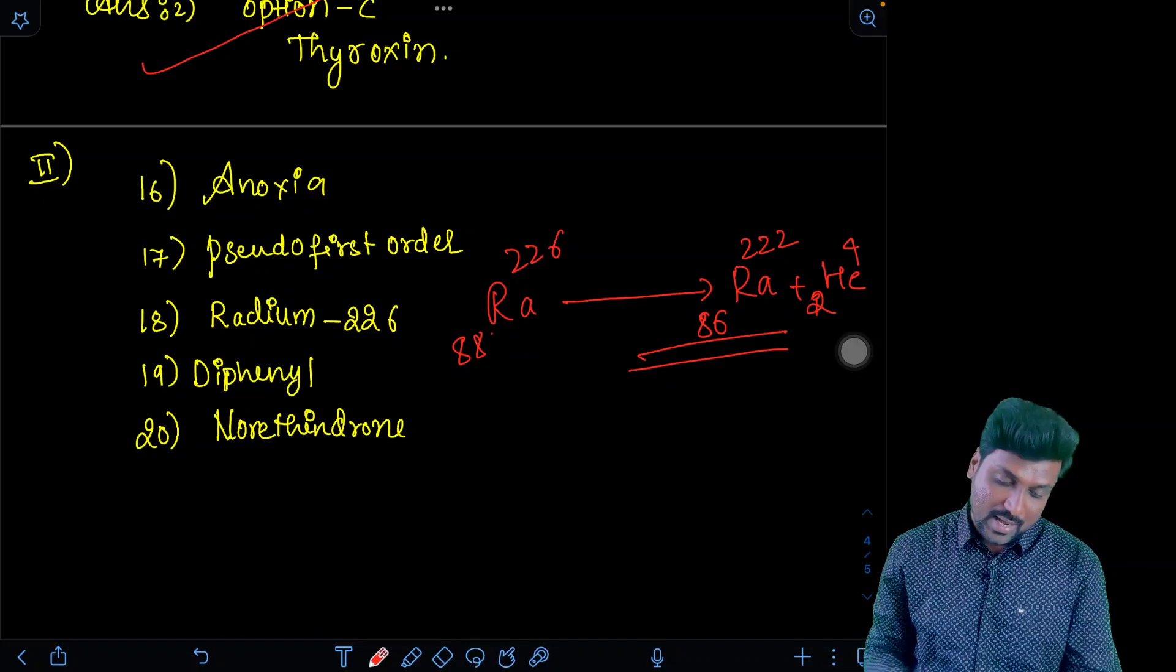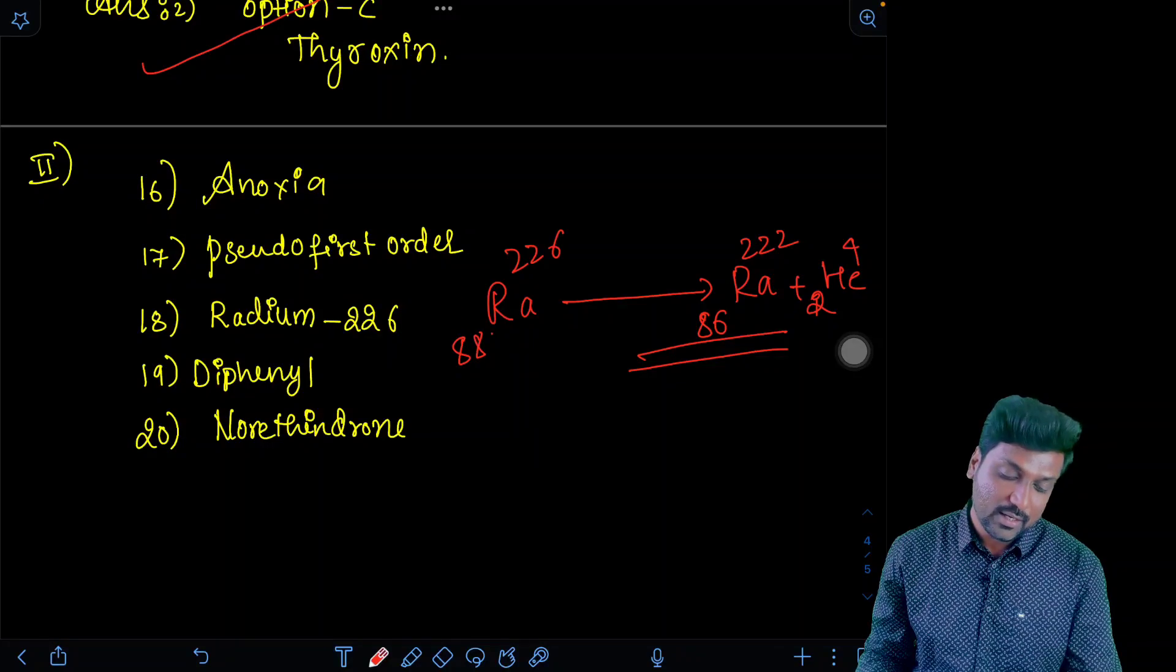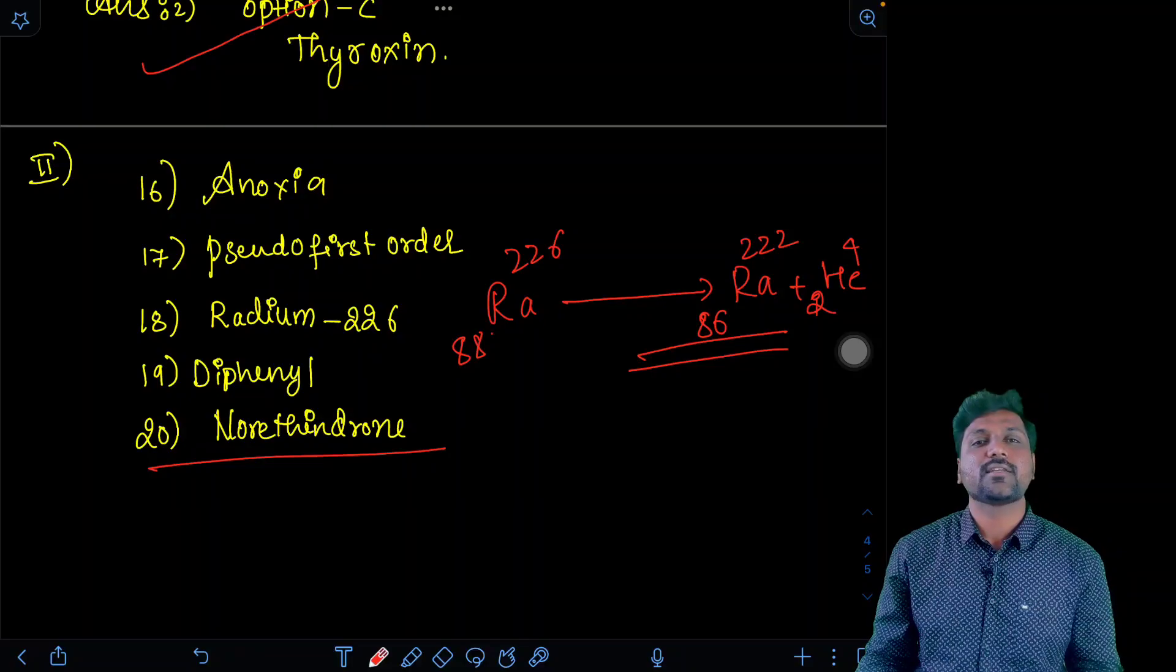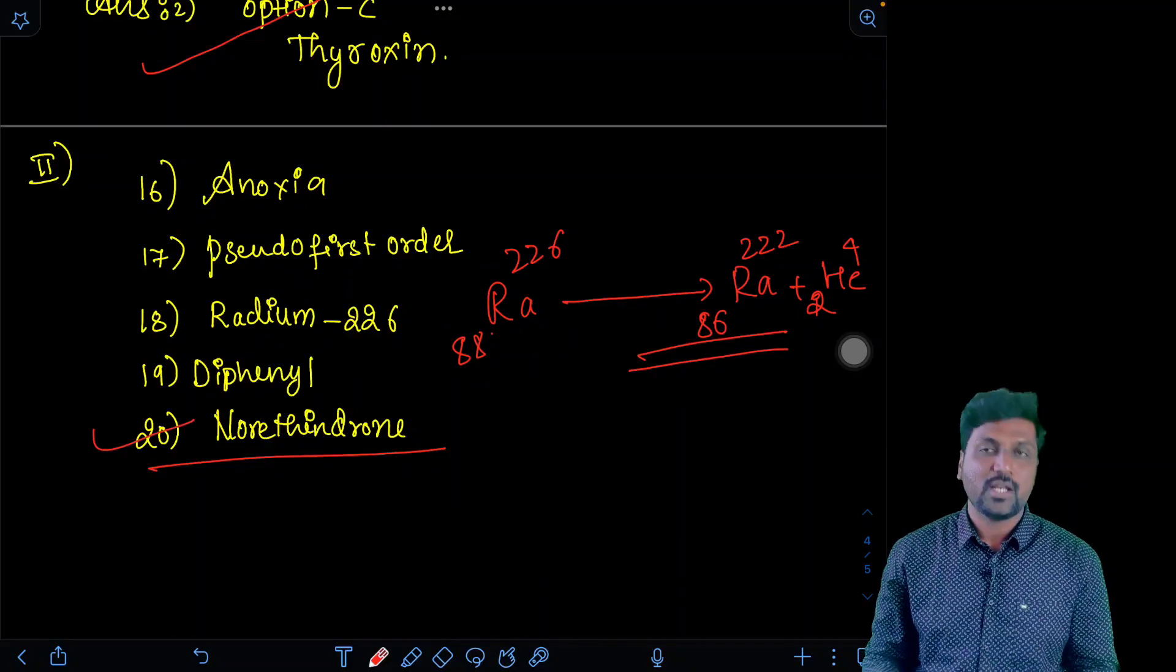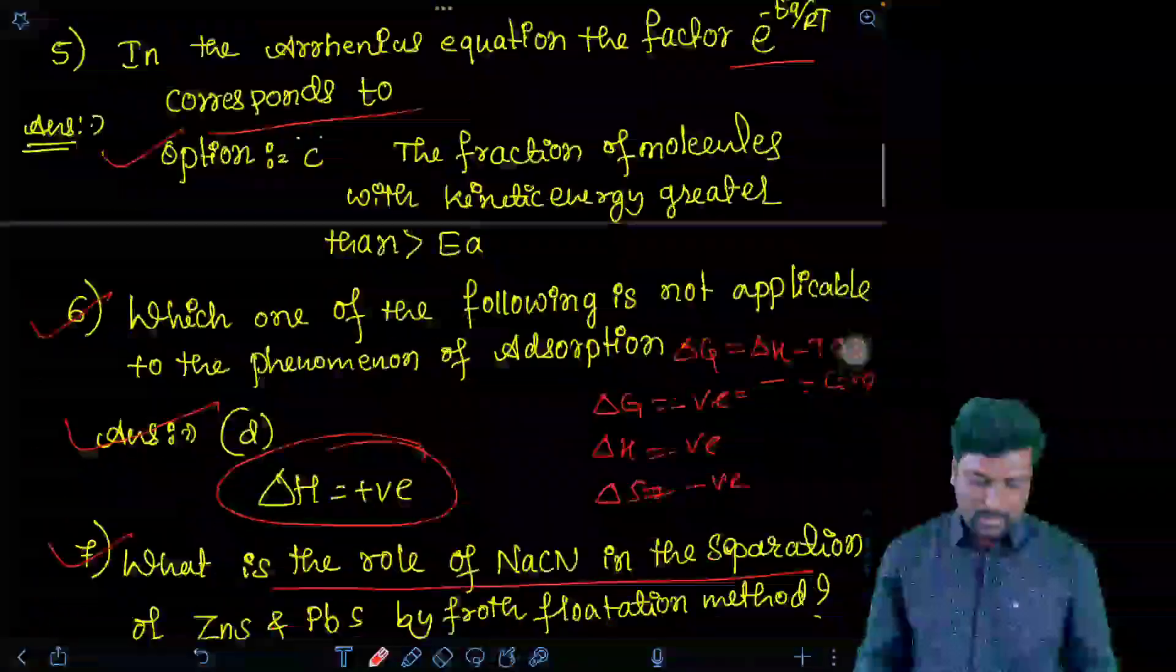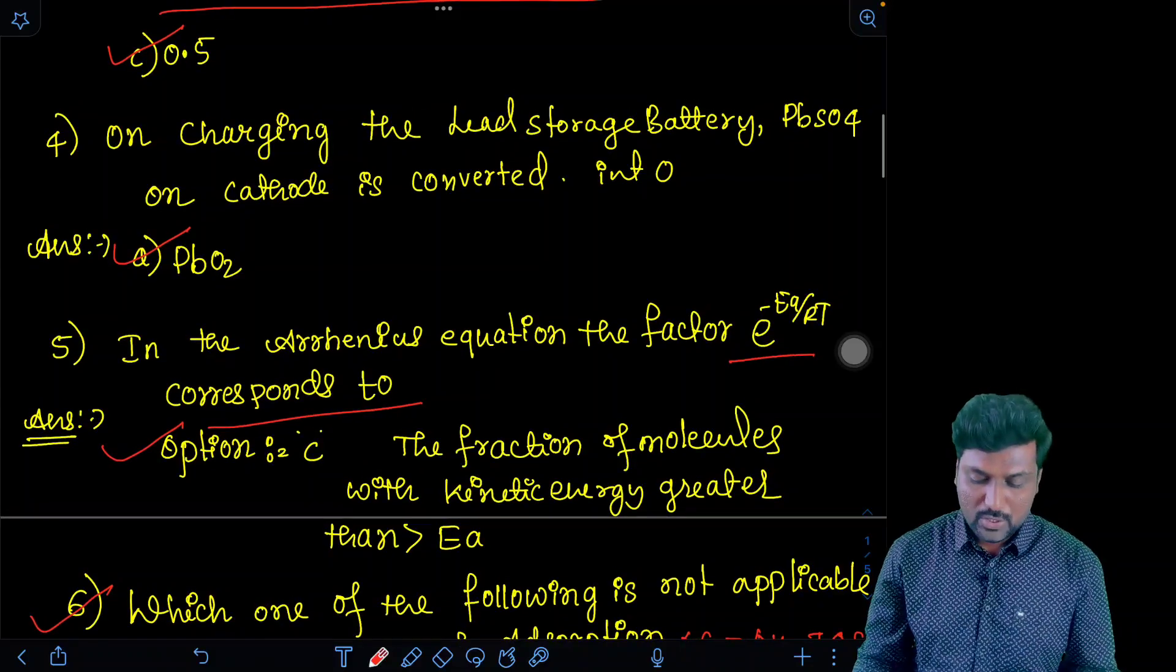And last question: this is a synthetic progesterone derivative most widely used as an anti-fertility drug. That progesterone derivative is norethindrone which is used as an anti-fertility drug. So I hope you all have attempted all the answers. And wish you all the best. And remember one more information.